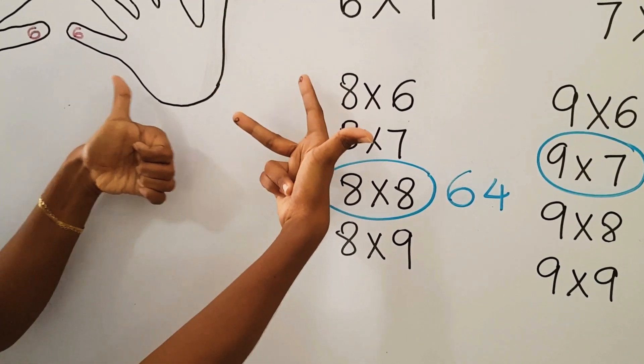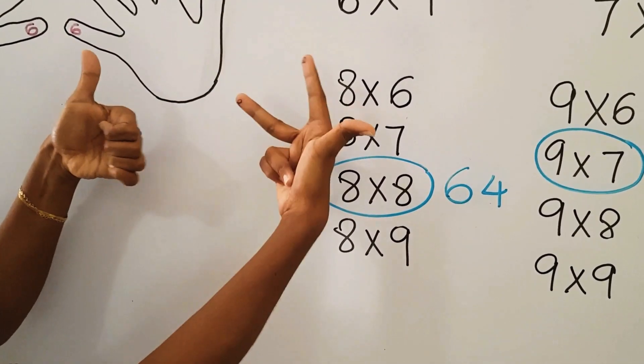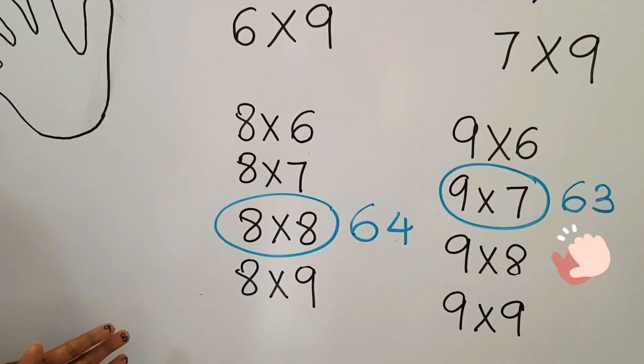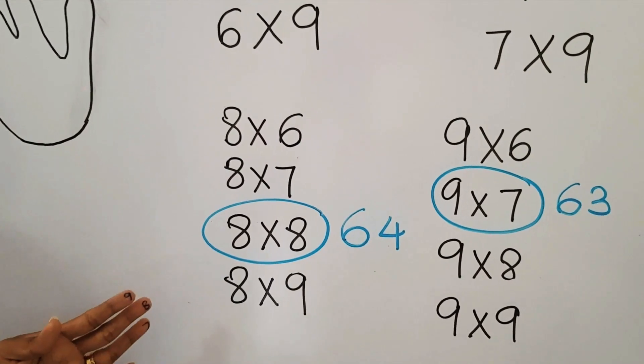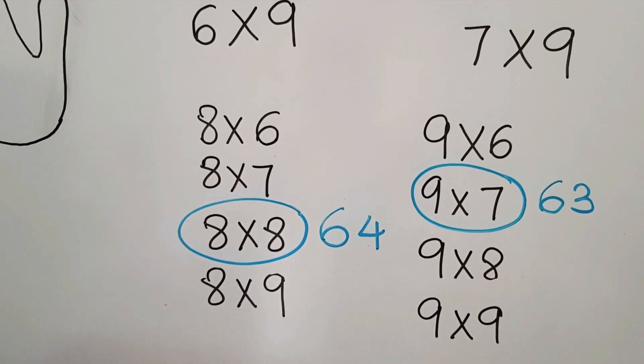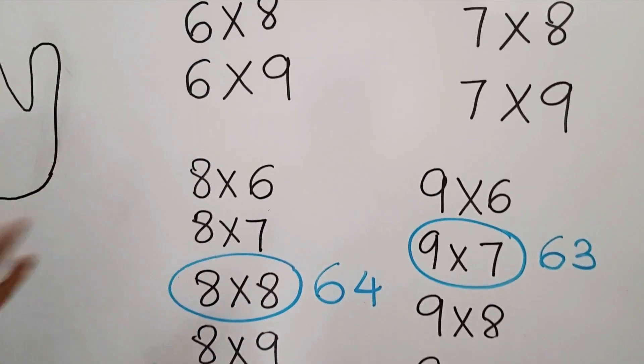So 1 multiplied by 3 will give us 3. So 60 plus 3 will give us 63. Hope you all have understood the method that I'm following in these multiplication tables.